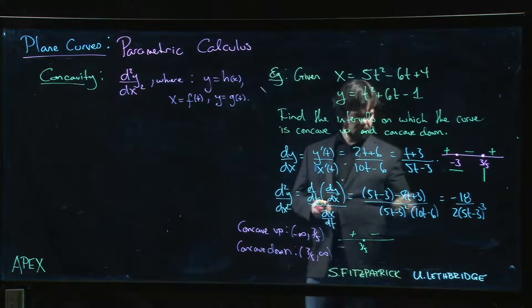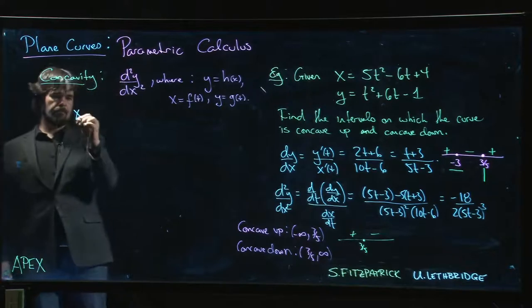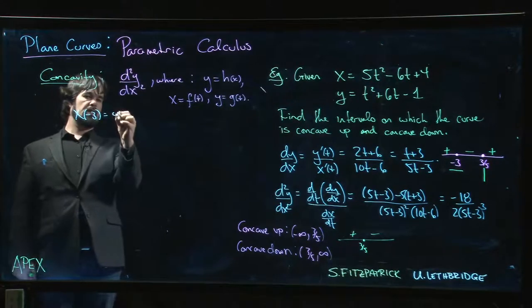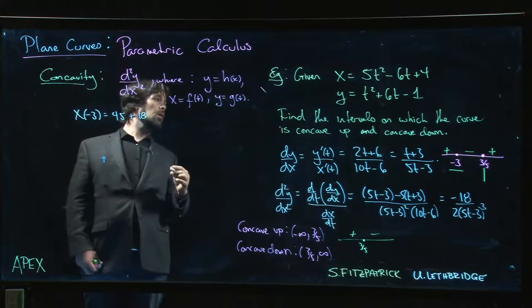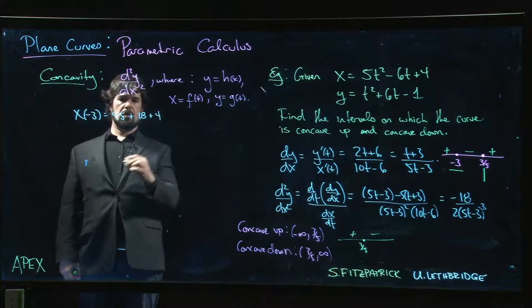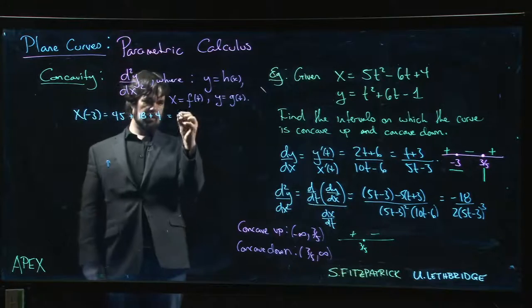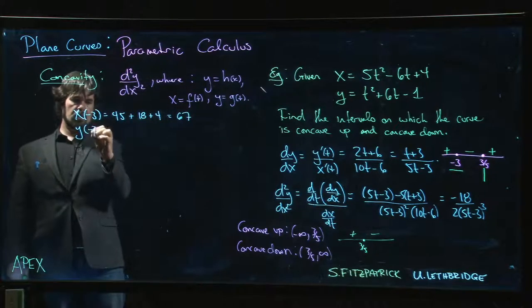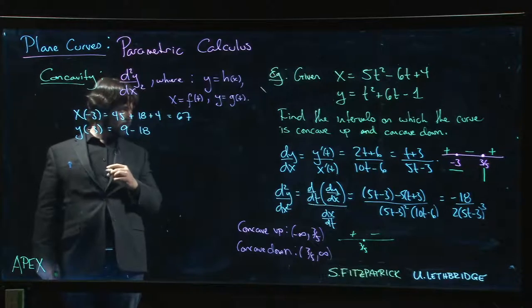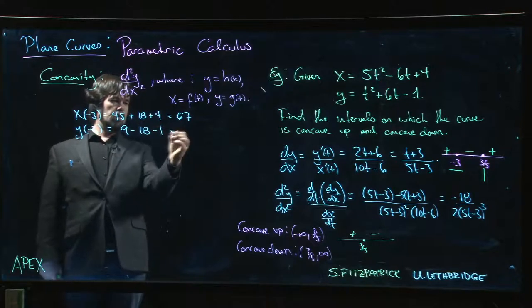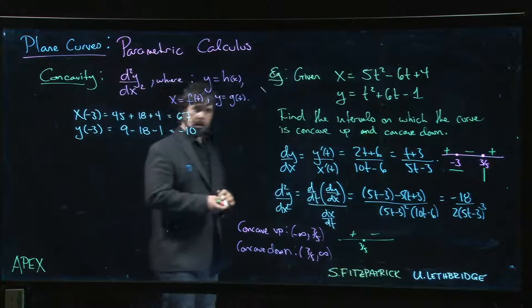Now we do have to finally bite the bullet and calculate our coordinates at these two points. x at t = -3 is going to be 45 plus 18 plus 4, that's 49, 59, 59 plus 8 gives me 67. y at t = -3, I get 9 - 18 - 1, so that's -19 + 9, I get -10.